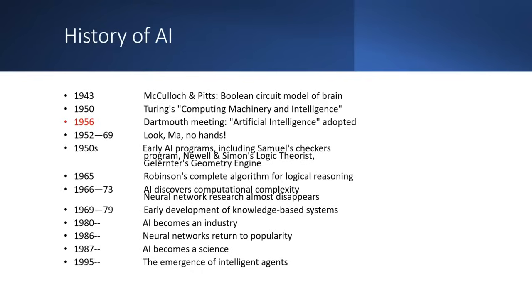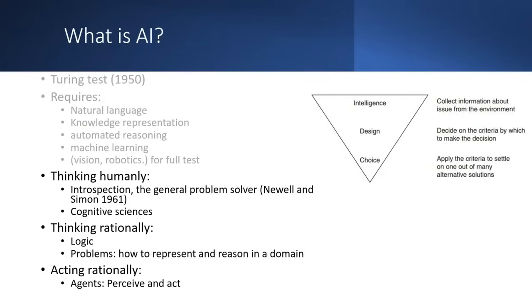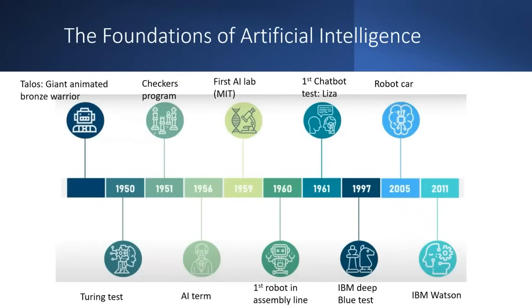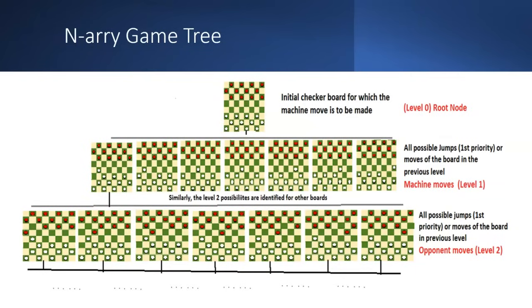Here we have a triangle: for intelligence we collect information, then design criteria by which to make a decision, and then apply the criteria to select one of many alternative solutions. Key milestones include the 1950 Turing test, the first AI programs, the IBM Deep Blue chess system, and IBM Watson. In a game, you teach the system what options are available, what priorities to set, and how to make moves on both sides — we call this a game tree.